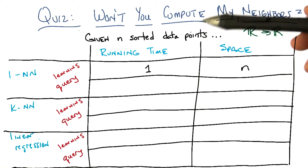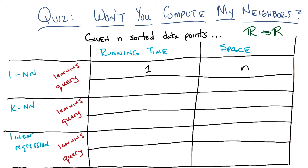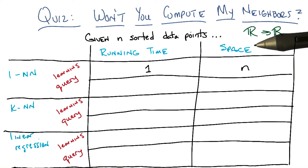To make things simple for you, I'm going to say that the points that you're given are already sorted. That makes sense if it's just a scalar. Then a query point is going to come in, and it's going to be some value, and we're going to have to find nearest neighbors or do linear regression. How much space you're going to have to use in order to accomplish your task.